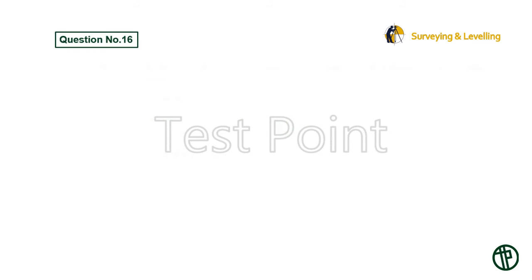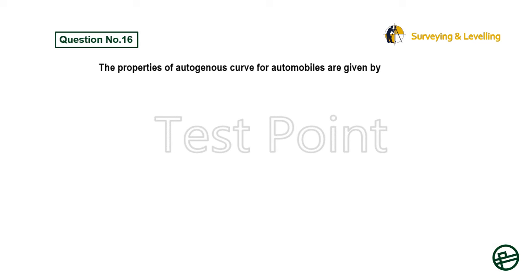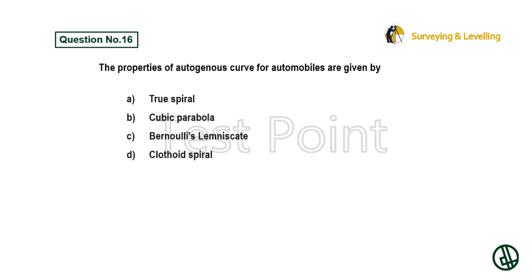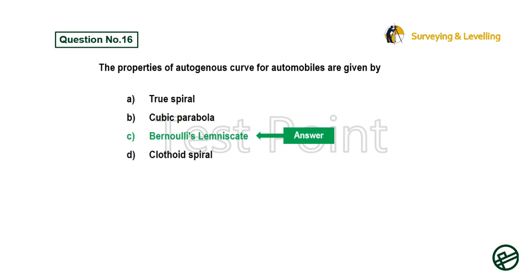Question 16: The properties of the ideal transition curve for automobiles are given by — Option A: True spiral. Option B: Cubic parabola. Option C: Bernoulli's lemniscate. Option D: Clothoid spiral. Answer is Option C: Bernoulli's lemniscate.